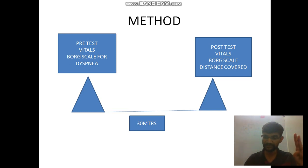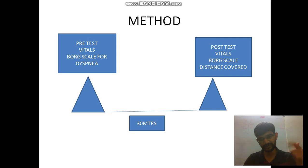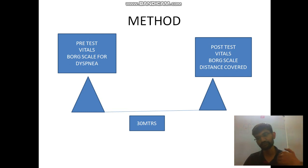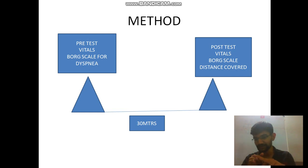We also check the Borg Scale of Dyspnea (B-O-R-G) as a pre-test measure. The patient should be adequately rested before starting — at least 10 minutes sitting comfortably on a chair — and then we check vitals. The patient should also avoid smoking, caffeine, and similar substances for at least two hours before the test.